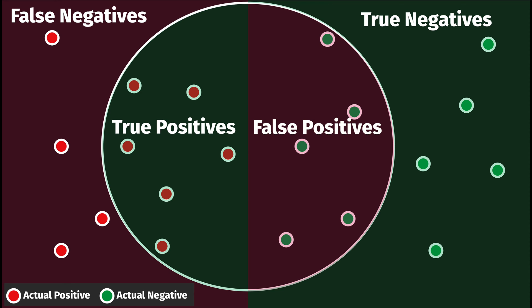When the model correctly identifies a negative case, this classification is a true negative, or TN. And incorrect negative classifications are false negatives, or FN.